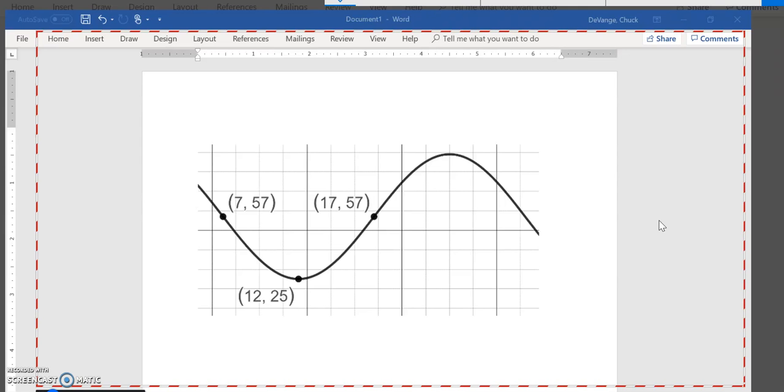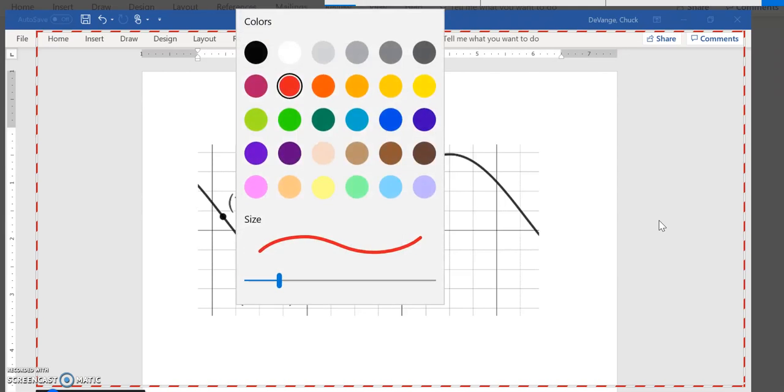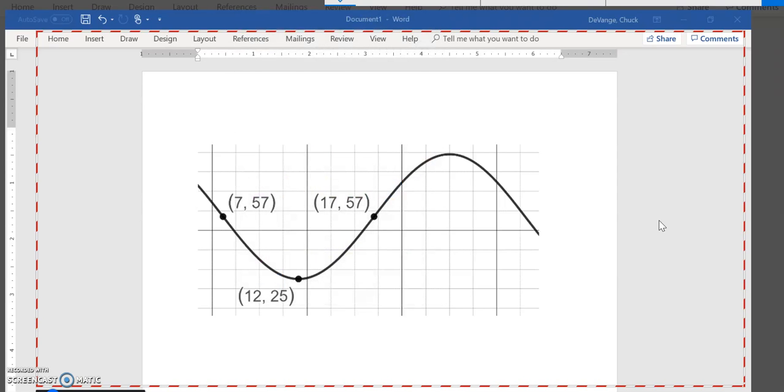All right, let's write an equation for this one. As I look at this, I'm going to change this to a different color. I notice I'm starting in the middle and I'm going down, so sine. I'm using the word starting loosely, that's just my furthest left point that I know. Sine usually